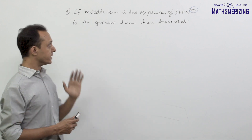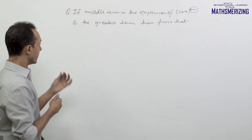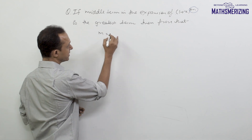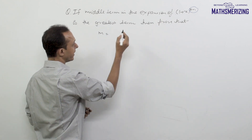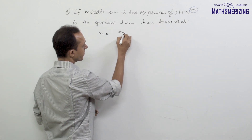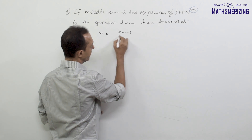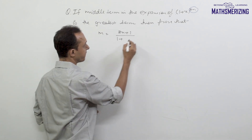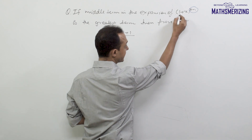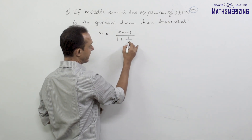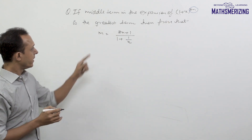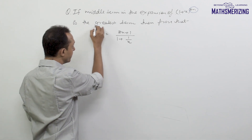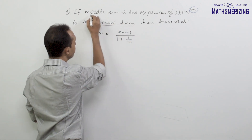Now we'll try to solve this question using the shortcut. For the shortcut, we'll find the value of m, and the value of m will simply be (n+1) divided by (1 + |x|). In this case, that becomes (2n+1) upon (1 + |x|). Since x equals 1 here, we get (2n+1)/2. This value should give us the greatest term, and this greatest term should be the middle term.